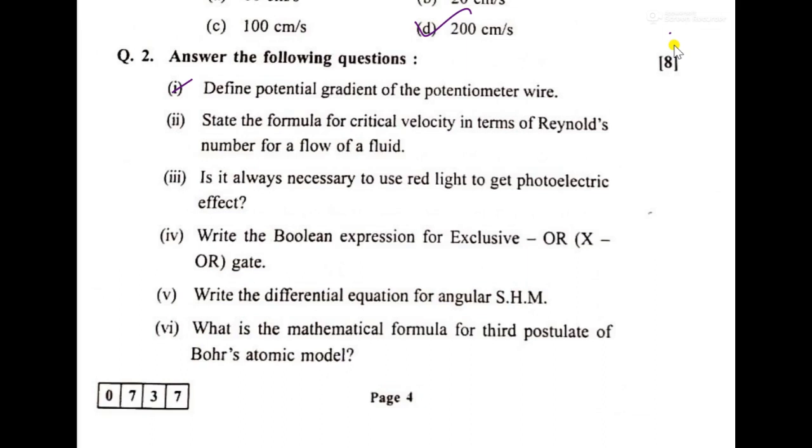Then state the formula for critical velocity in terms of Reynolds number for a flow of liquid. So this answer will be Vc is equal to Reynolds number times Eta viscosity upon rho d.